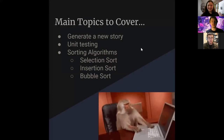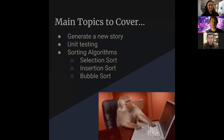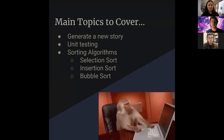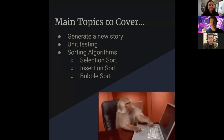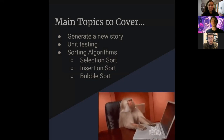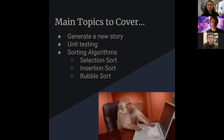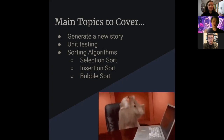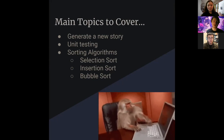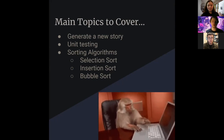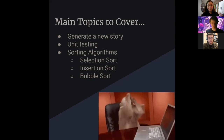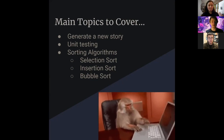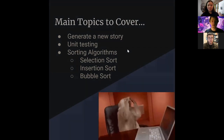We have basically three main topics to cover, technically four but three main ones. We're going to go over generating the new story again, because it lets us cover a lot of concepts from the third part of the course. We'll then cover unit testing briefly, the three main sorting algorithms — selection sort, insertion sort, and bubble sort — and complexity briefly.